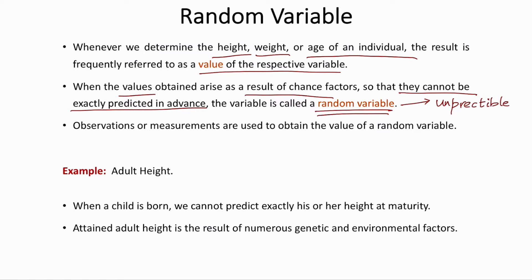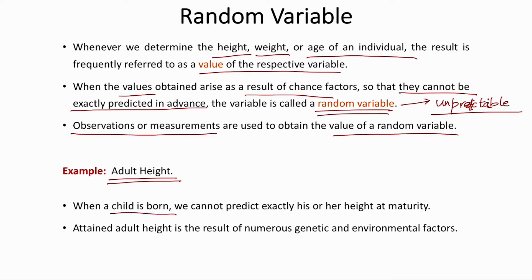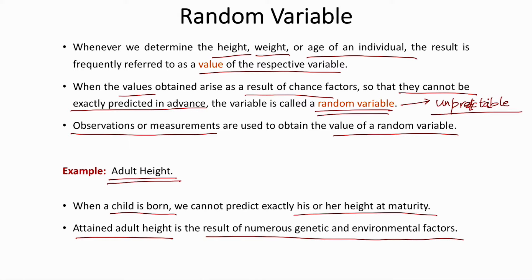Observations or measurements are always taken to obtain a random variable. For example, a person's height is always measured, never exactly predicted, so it is considered a random variable. When a child is born, we cannot predict their exact length. Adult height is the result of genetic and environmental factors, which is why it is considered a random variable — we cannot predict exactly what a person's height will be.